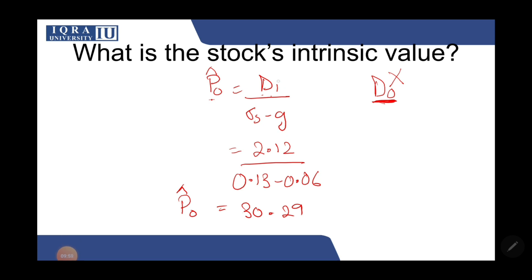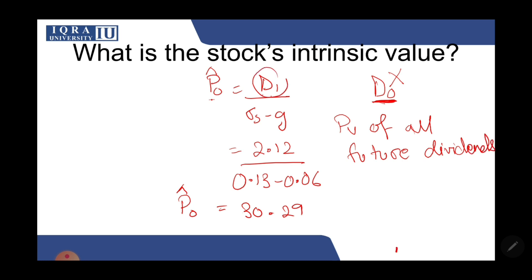This formula is calculating the present value of all future dividends — not just D1, but D1 through infinity. So even though you only input D1 in the formula, it actually captures D2, D3, D4, and all dividends to infinity, giving us 30.29.